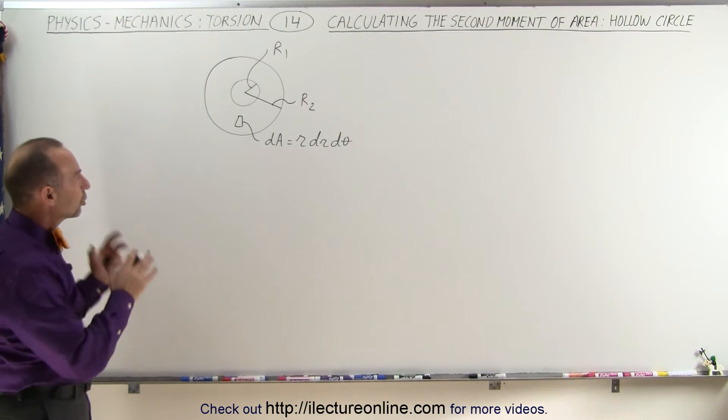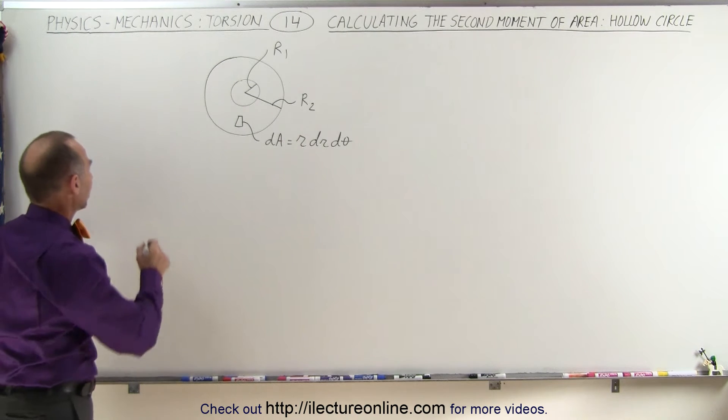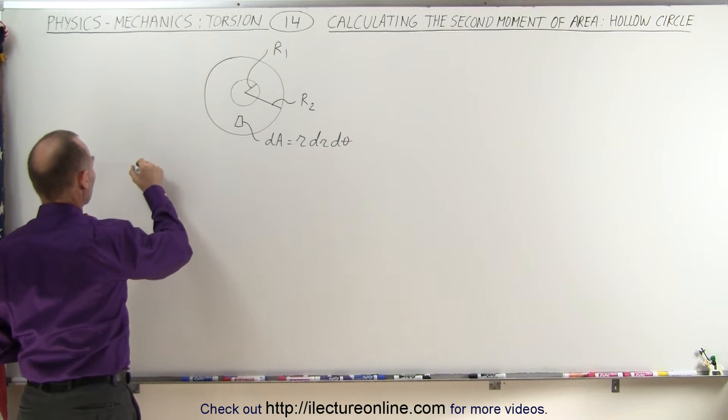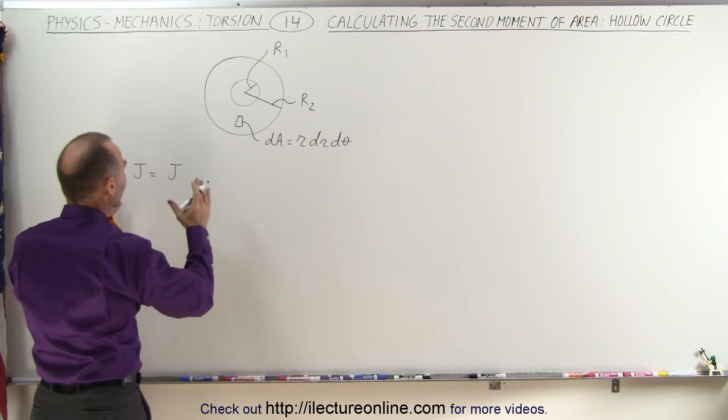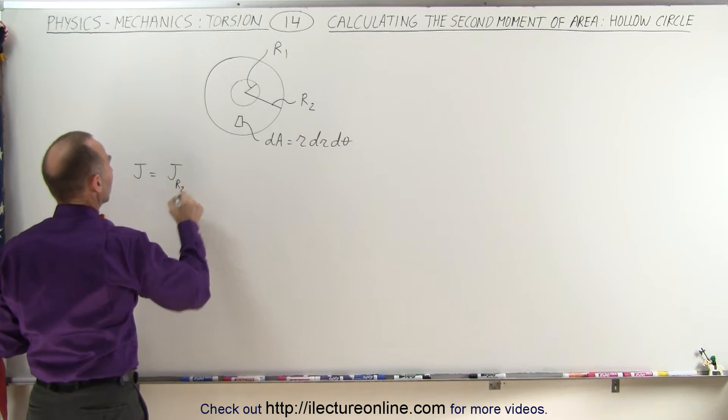To find the torsional constant for this we can do the following. We can say that the torsional constant J is equal to the torsional constant of the outside radius, let's call it R2,